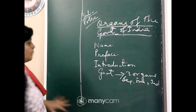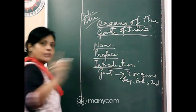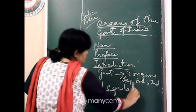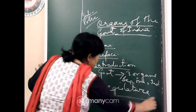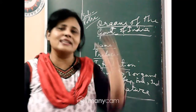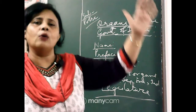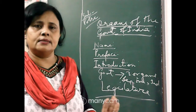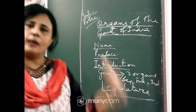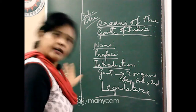After the introduction, you will move to the body part. The first heading will be 'Legislature.' Cover what the Indian legislature is known as, its term, its composition, who is its head, and the powers of both houses — first the Rajya Sabha, then the Lok Sabha. After that, move to the next organ: the executive.